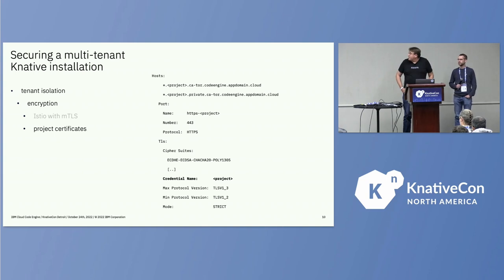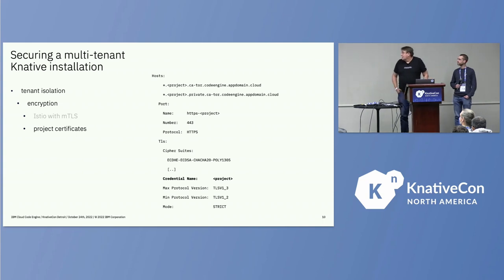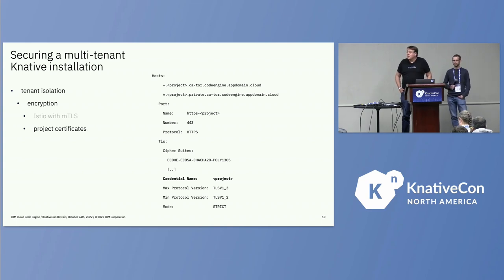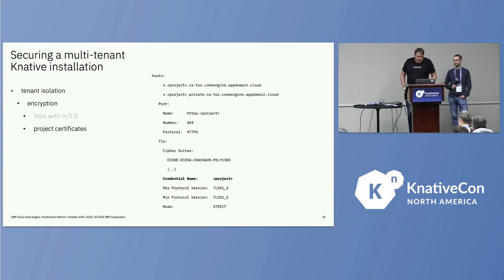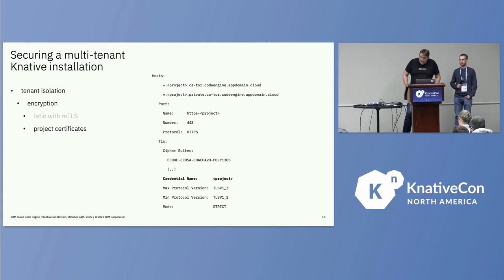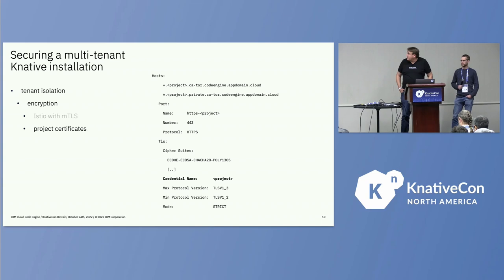Istio as a Knative service mesh has a number of options you can choose from. When we started, we decided that every customer project should have its own certificate, and at that point in time that narrowed our choice of service mesh down to one — Istio — supporting that configuration. We configure our gateway configuration so that each project, which is a namespace in Kubernetes, gets its own certificate. We use Let's Encrypt and configure that in the gateway file.